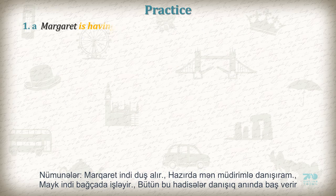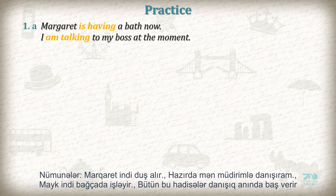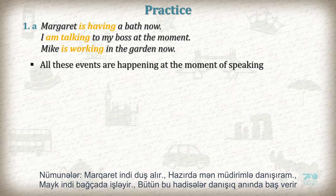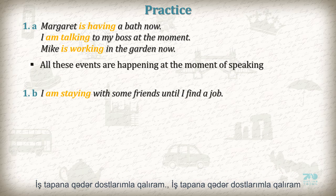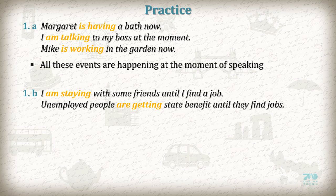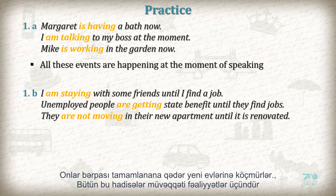Practice. 1A — actions happening at the moment of speaking: 'Margaret is having a bath now.' 'I am talking to my boss at the moment.' 'Mike is working in the garden now.' 1B — temporary actions: 'I am staying with some friends until I find a job.' 'Unemployed people are getting state benefit until they find jobs.' 'They are not moving into their new apartment until it's renovated.'